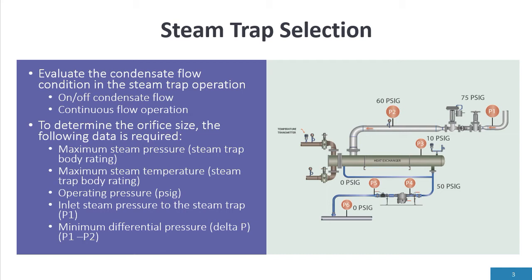We need to know the inlet to the steam trap and the minimum differential pressure. In part one we talked about how to come up with the pressure drop across the control valve, the pressure drop through the heat transfer, so we come up with P4 and P5, which is outlined in this presentation.